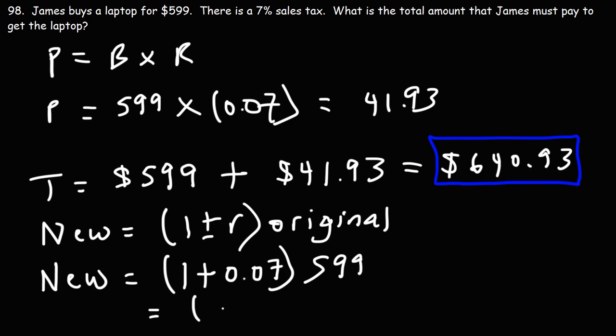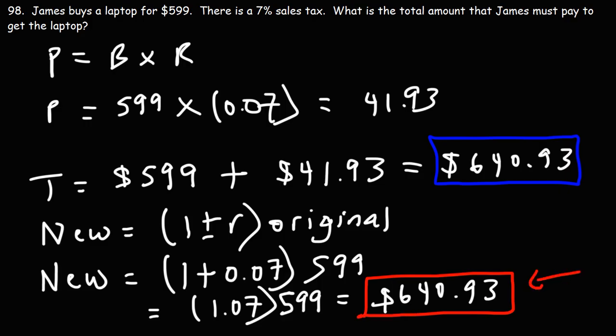So what we're going to do is multiply 1 plus 0.07, which is 1.07. So we're going to multiply 599 by 1.07, and that will give us the same answer: $640.93. So using that formula, it's a faster way to get the final answer. You won't need to add these two numbers; it will skip that step. So for other problems, you're going to find this formula to be very helpful.